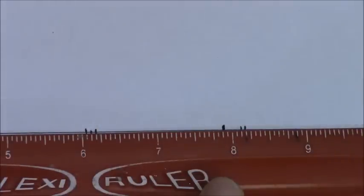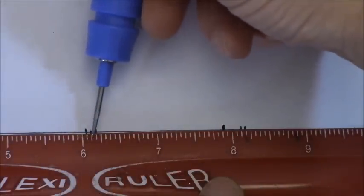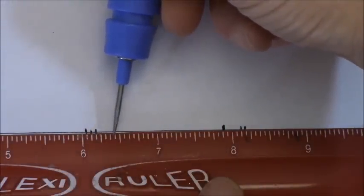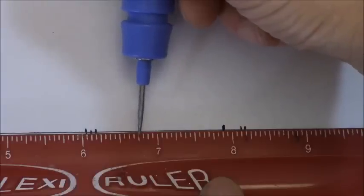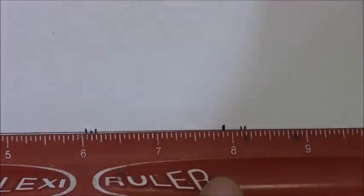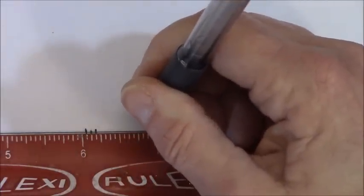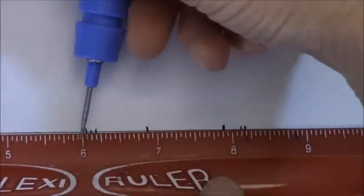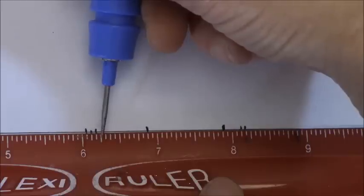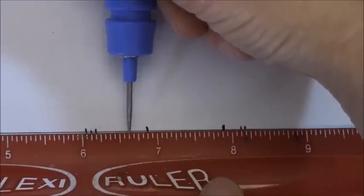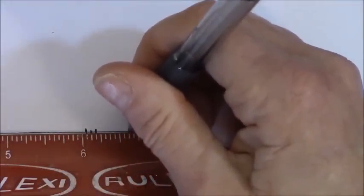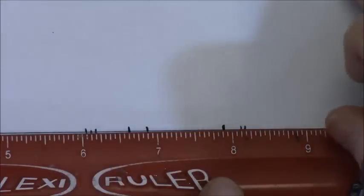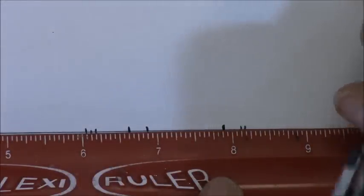The next one is 6 and 7/8ths. Here's 6. Let's count. 1, 2, 3, 4, 5, 6, 7. Right there. 6 and 7/8ths. The next one is 6 and 5/8ths. So let's do that one. 1, 2, 3, 4, 5. There is 6 and 5/8ths right there.